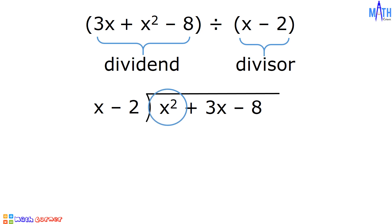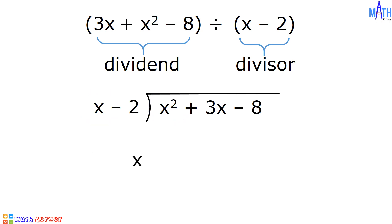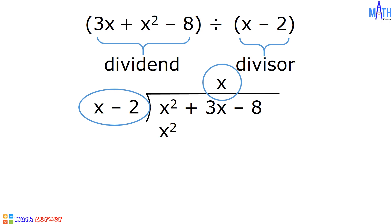Let us divide the first term of the dividend by the first term of the divisor. x squared divided by x, or x raised to 1, is equal to x raised to 2 minus 1, and it is equal to x. x is the first term of the quotient. Next step, multiply x by x minus 2. x times x is equal to x squared. x times negative 2 is equal to negative 2x.